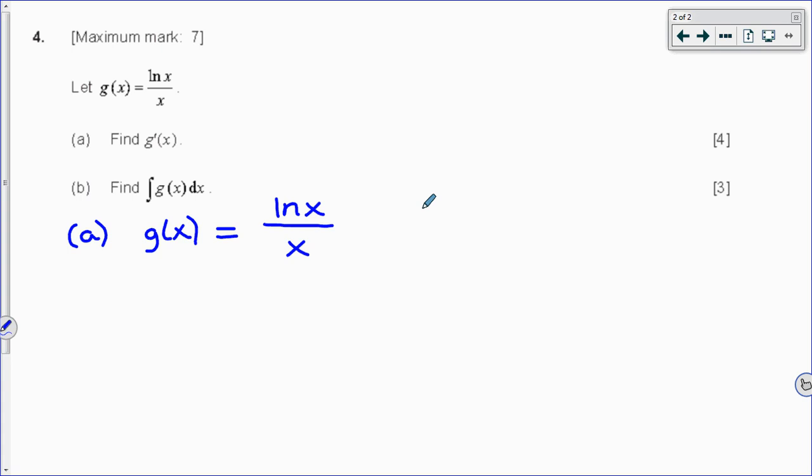If I was to write it out in shorthand: bottom times the top prime, which means the derivative of the top, minus the top times the bottom prime, which means the derivative of the denominator, all over the denominator squared.